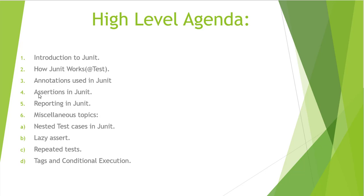Then in the fourth tutorial we will be seeing assertions in JUnit. Assertions are a very important part of JUnit in which we compare the expected and actual values and get the result. Then in the fifth series we will be having reporting in JUnit. Reporting is a very important part whenever we are developing an application — how to report what has failed and what has passed, and how consistent your product is.